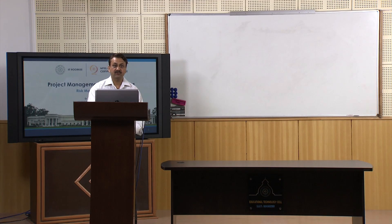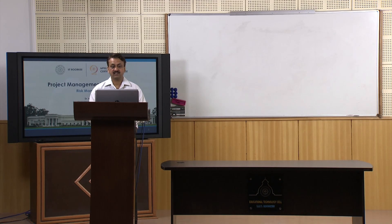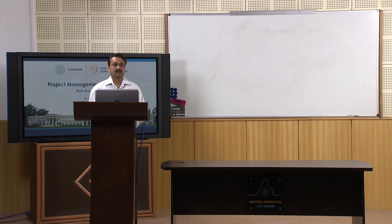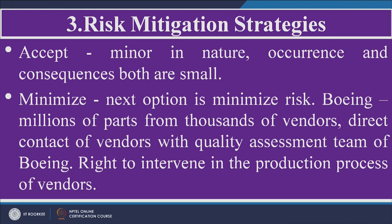That was the second point — risk analysis. There are four points in the risk management process: the first was identification of risk, the second was analysis of risk, and now let us look at the third point, which is risk mitigation — how to mitigate risk. If the risk is minor, simply accept it, because the consequences would not be significant.